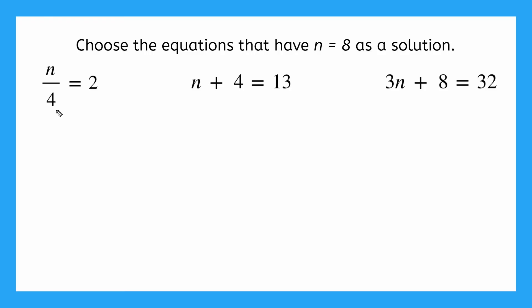So let's start with our first one here. n over 4 equals 2. Using substitution, I'm going to plug in my given value of 8 wherever I see the n. So this will be 8 over 4 is equal to 2. Order of operations, just one here, I'm going to divide. How many times does 4 go into 8? 2, and 2 does equal 2. So this one checks out, n equals 8 is a solution.